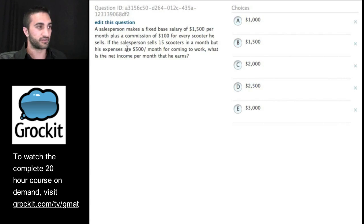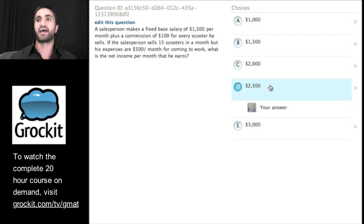Let's take a look at this question. A salesperson makes a fixed base salary of $1,500 per month plus a commission of $100 for every scooter he sells. If the salesperson sells 15 scooters in a month but his expenses are $500 per month for coming to work, what is the net income per month on what he earns? Well, the answer is 2,500 obviously, right? That was easy. You should have just had that answer pop into your head after reading that word problem, right? Probably not. Didn't happen for me.